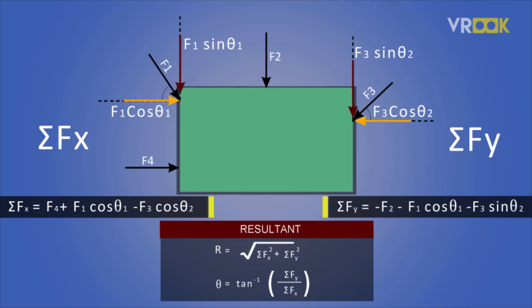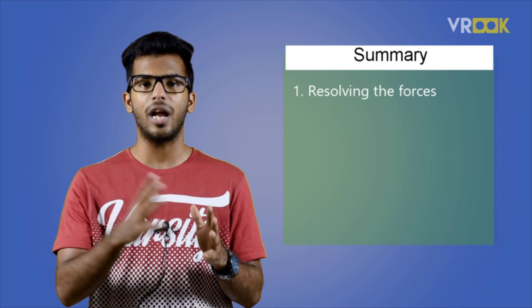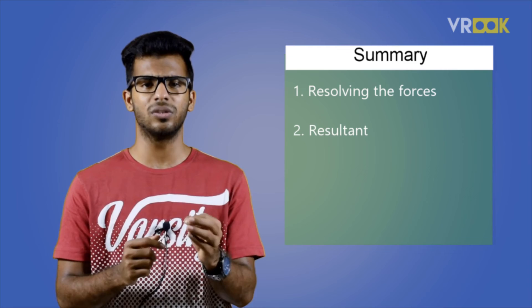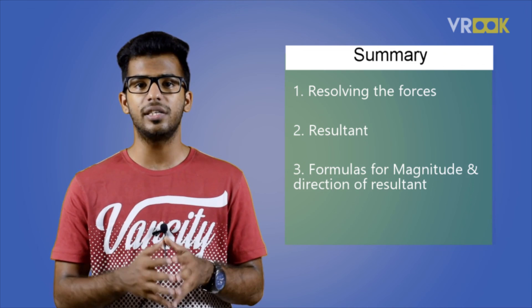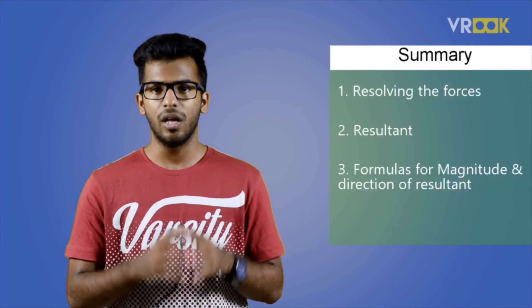The direction angle is given by theta equals tan inverse of Sigma Fy divided by Sigma Fx. To sum up, in this video we learned about resolving forces into horizontal and vertical components, the resultant as a single force replacing all others, and the formulas for its magnitude and direction angle. In the next video, we look at the law of transmissibility of forces.